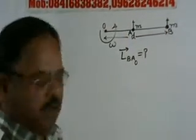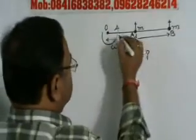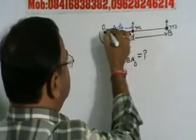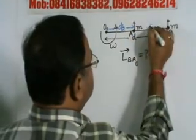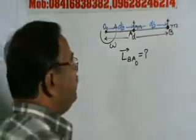So this distance will be equal to how much? D by 2, center pe hai, and this will also be equal to D by 2. Both divide from the center.